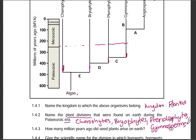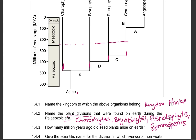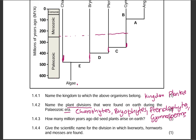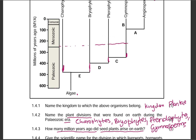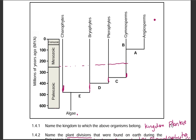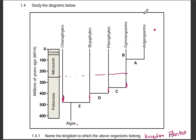Next question: how many million years ago did seed plants arise on Earth? You need to remember which groups produce plants with seeds. Seed-bearing plants are our Gymnosperms and our Angiosperms. So when did they arise? This is their branch on the diagram.